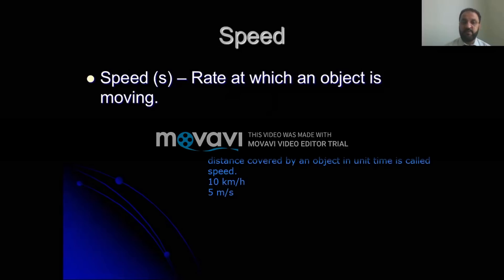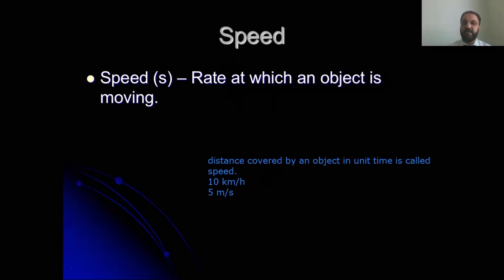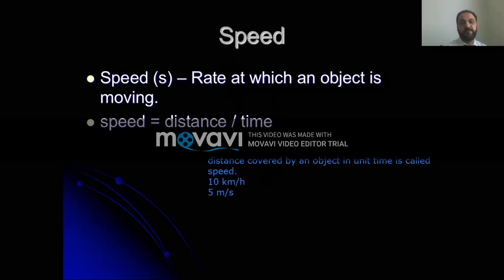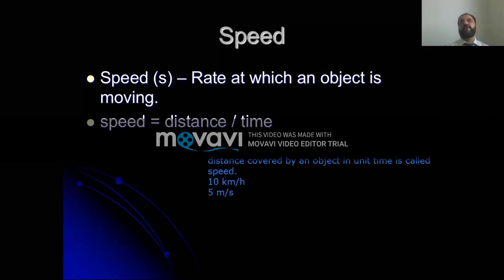Rate at which an object is moving — when you say rate, it's with respect to time. So the same thing: you can write the definition as distance covered in unit time, or rate at which an object is moving. This is speed, and the unit of speed is kilometer per hour. We can calculate speed using the formula: distance divided by time.